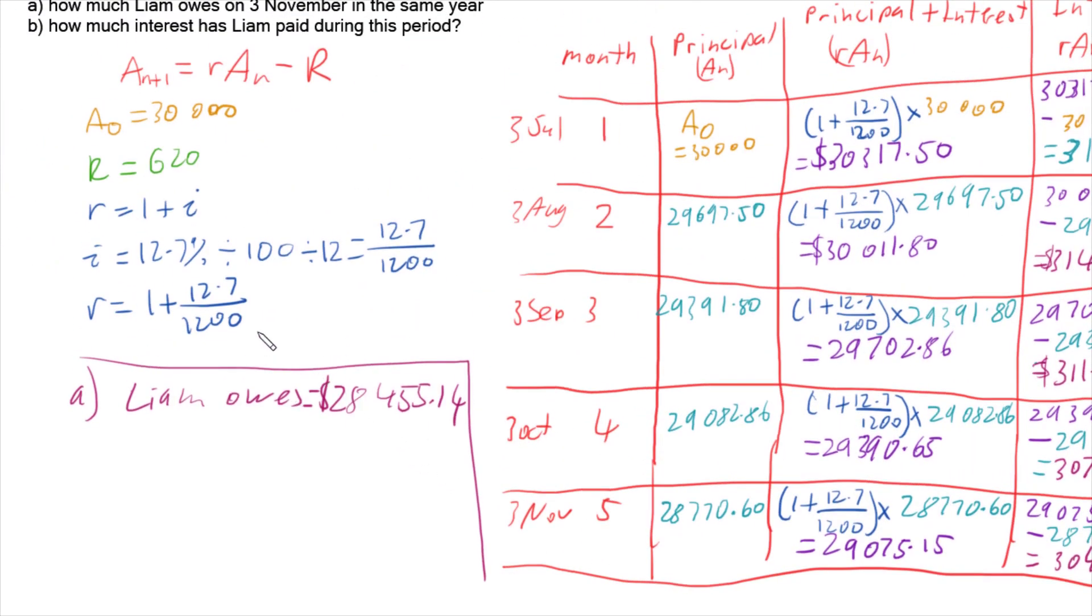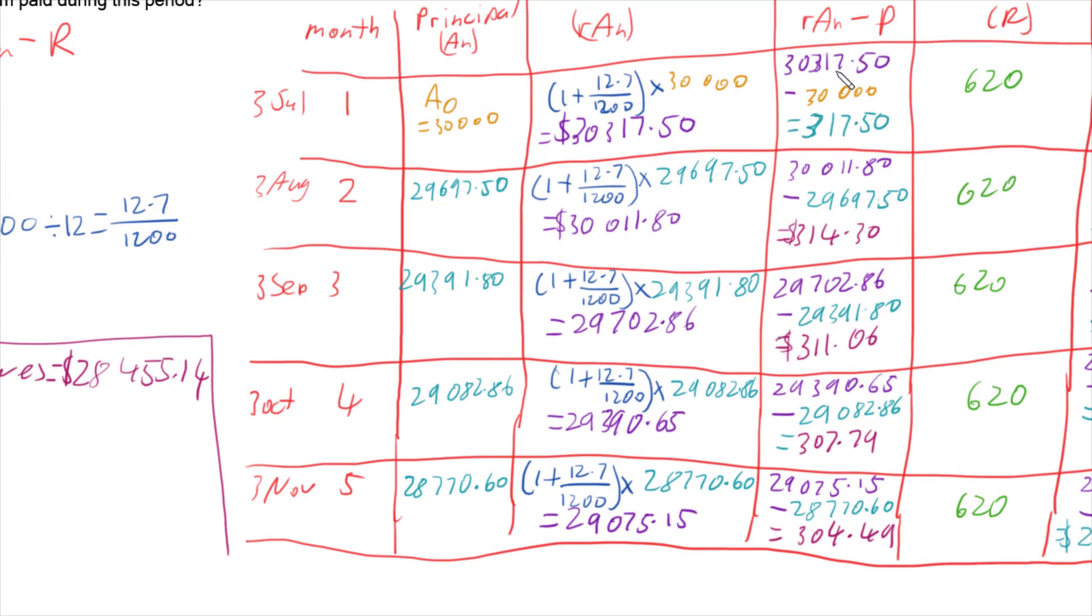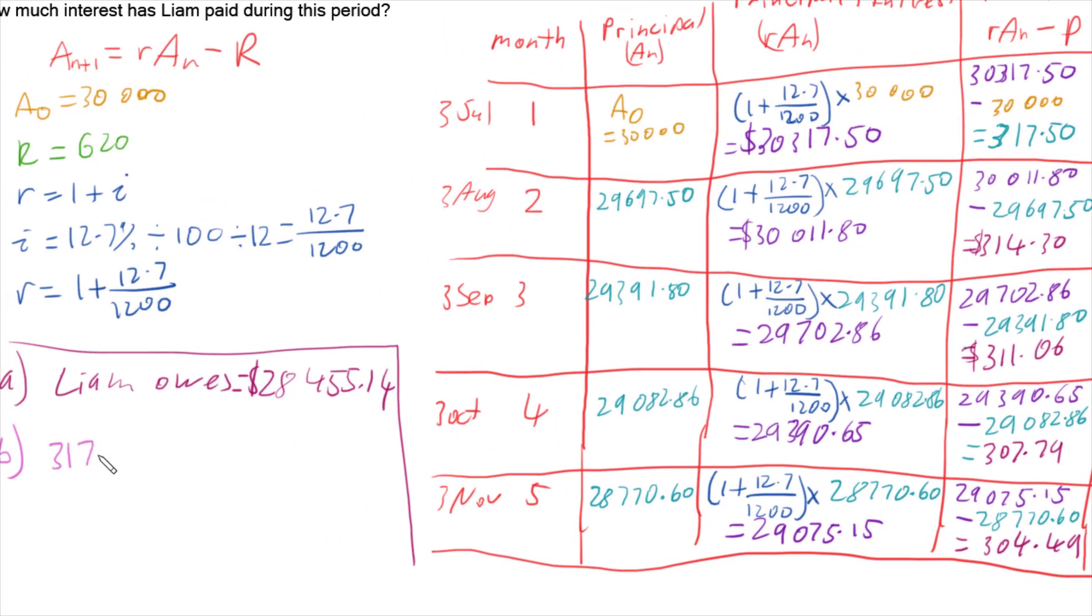And part B, which is why we keep track of the interest earned every time through our loan, is so that we can work out how much interest is paid during this period. Because the total interest paid is all of these numbers added up. So we just got to add up this column. So we've got to do 317.50 plus 314.30 plus and so on. So our interest paid gives us a grand total of $1,555.14 that he paid across these 5 months.